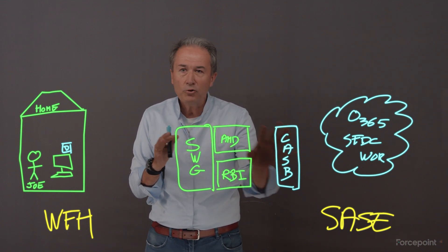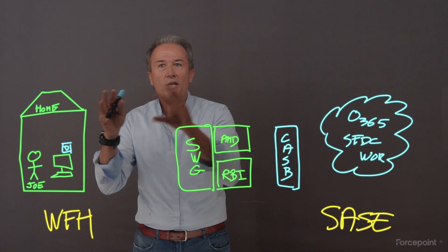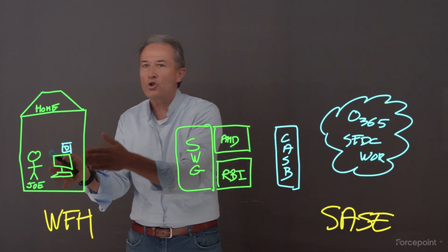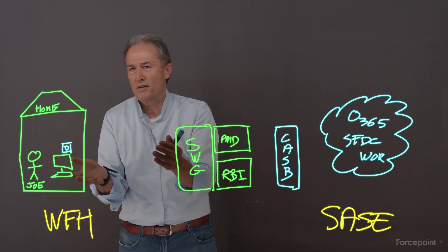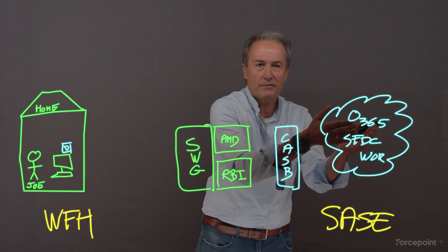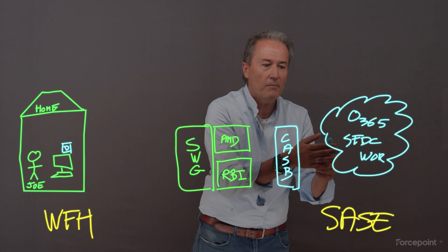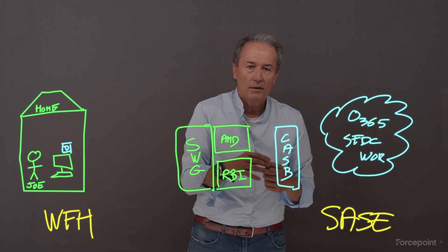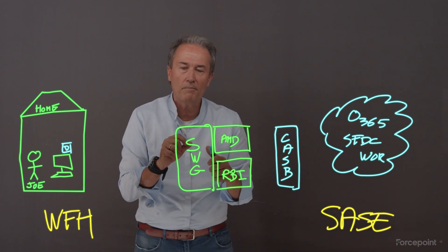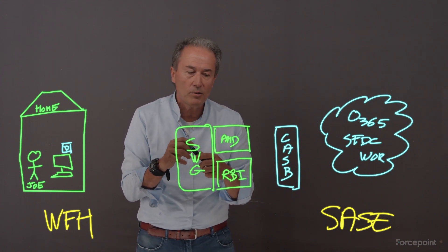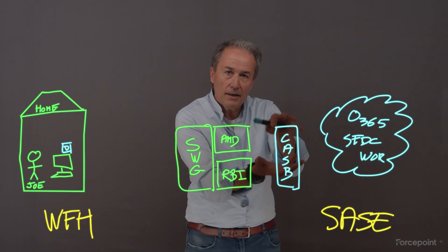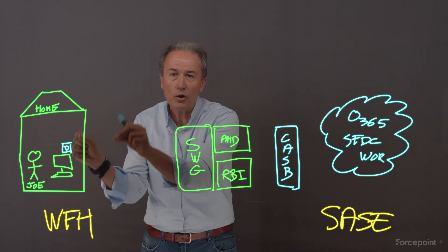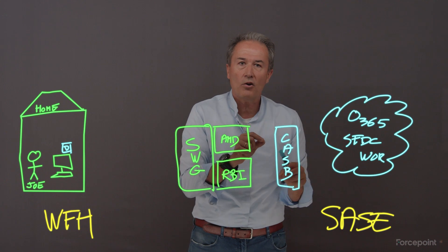We want to be able to block the WeTransfer traffic and instead tell the end user — tell Joe — don't use WeTransfer. Use the corporate alternative: OneDrive from Microsoft, because that's the sanctioned application from IT. We can do that with that integration. Really powerful. With this inline CASB, we have very granular control of what Joe can do across these SaaS applications.